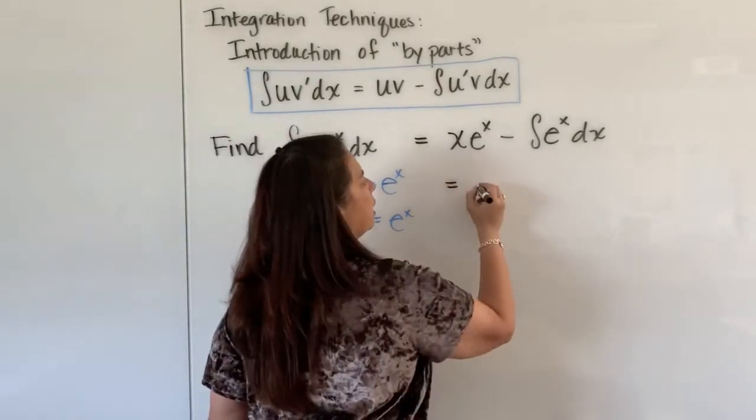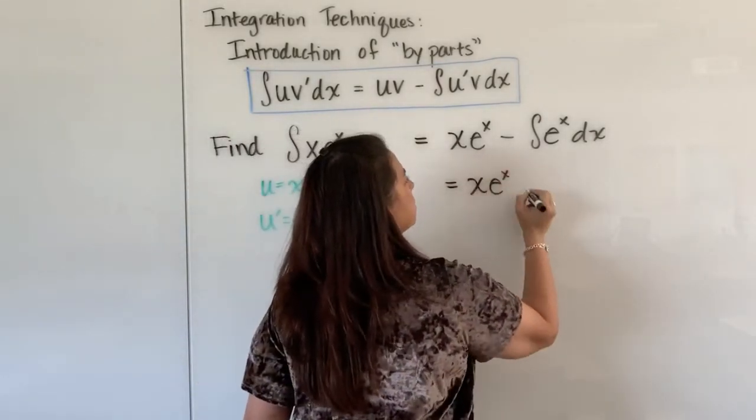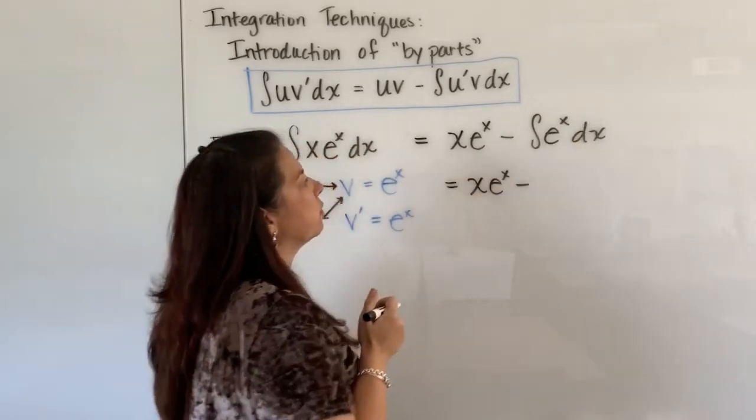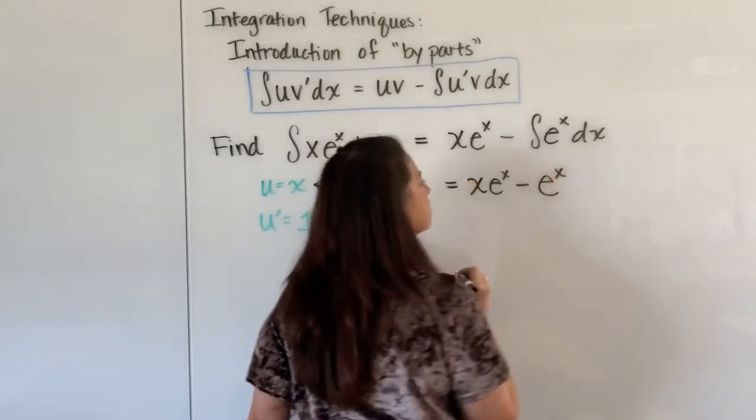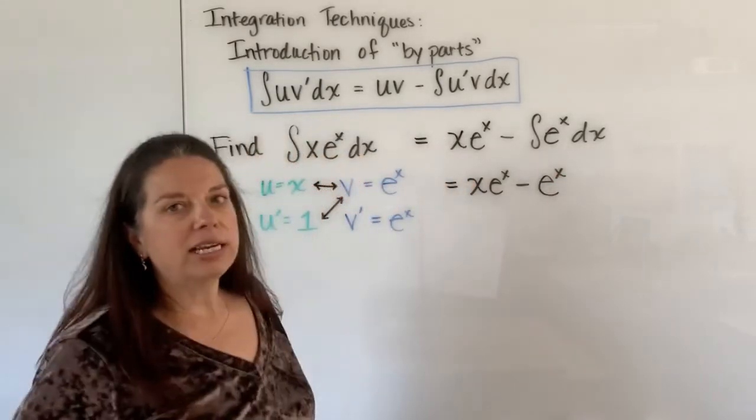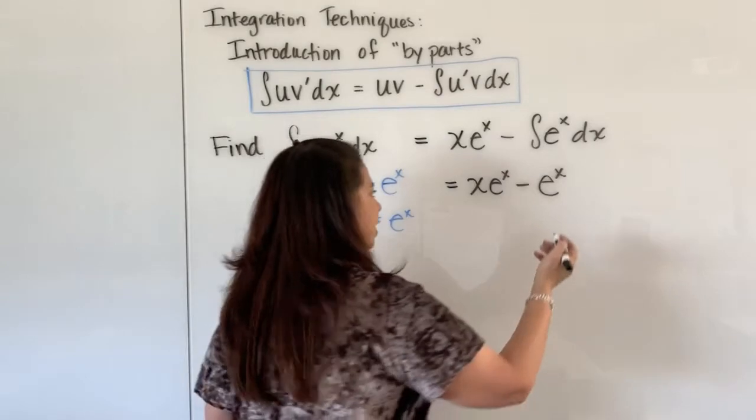So to finish this off, rewrite your x e to the x minus the answer here for the integral of e to the x dx is again just e to the x, and because you have an indefinite integral you have to add your c on to the end.